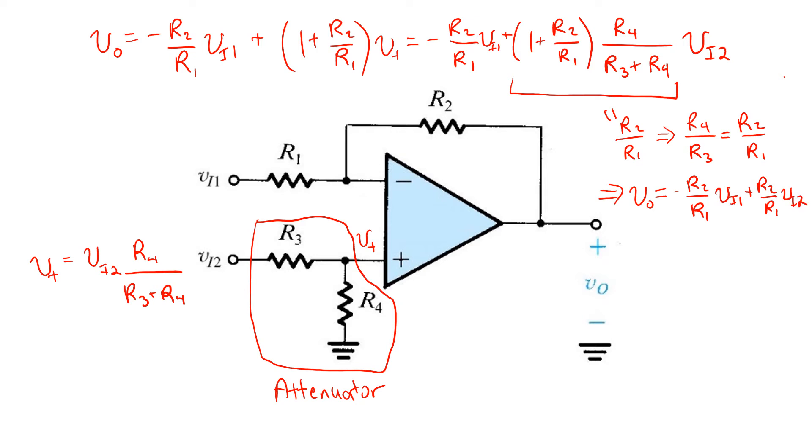So, now we've got a proper difference amplifier. The output is a gain constant, the differential gain AD times the differential input voltage VI1 minus VI2 where the differential gain equals R2 over R1, which remember is the same as R4 over R3 must be taken that way in order to ensure we get a proper difference amplifier.